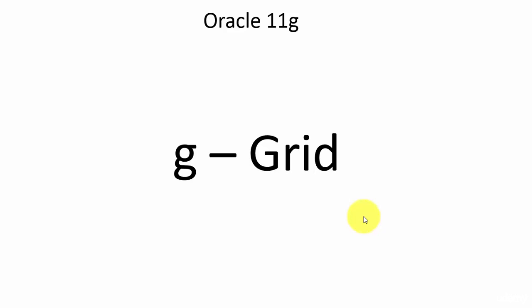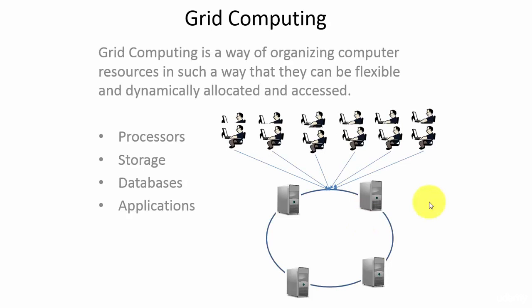What is grid computing? Grid computing is a way of organizing computer resources in such a way that they can be flexible and dynamically allocated.